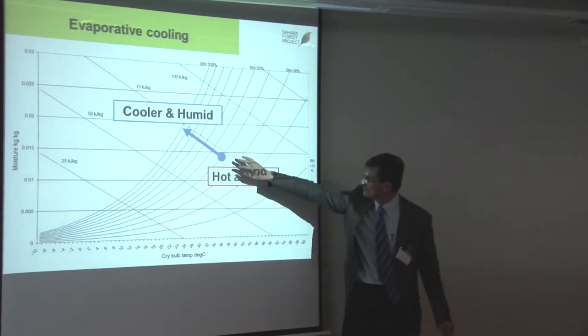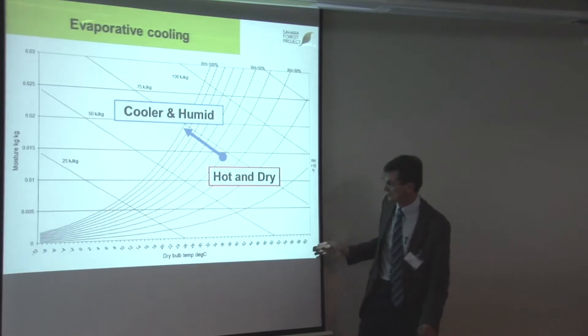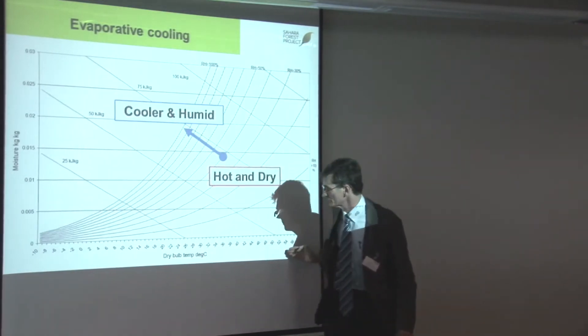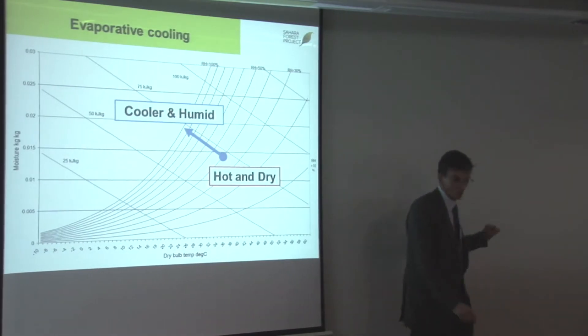Basically, if you start off with something hot and dry, some air which is hot and dry. This is a psychometric chart for those who might not have seen it. You've got dry-bulb temperature on the bottom, which is the temperature you'd see on a thermometer on the wall.